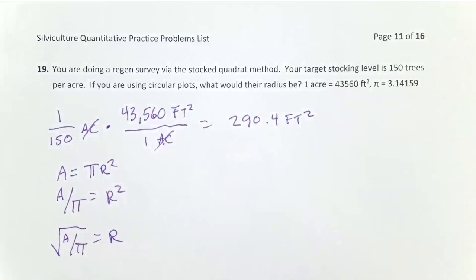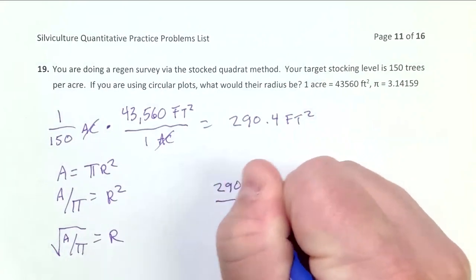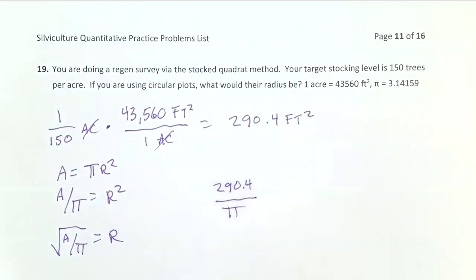There's my equation. So now I plug in area right here. So I do 290.4. I divide it by pi, 3.14159.